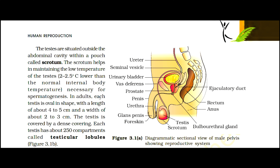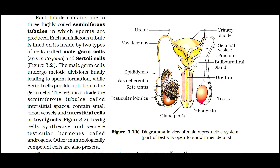In adults, each testis is oval in shape with a length of about 4–5 cm and a width of about 2–3 cm. The testis is covered by a dense covering. Each testis has about 250 compartments called testicular lobules, as given in figure 3.1b. Each lobule contains 1–3 highly coiled seminiferous tubules in which sperms are produced. Each seminiferous tubule is lined on its inside by two types of cells: male germ cells, which is spermatogonia, and Sertoli cells, as given in figure 3.2. The male germ cells undergo meiotic divisions finally leading to sperm formation, while Sertoli cells provide nutrition to the germ cells.